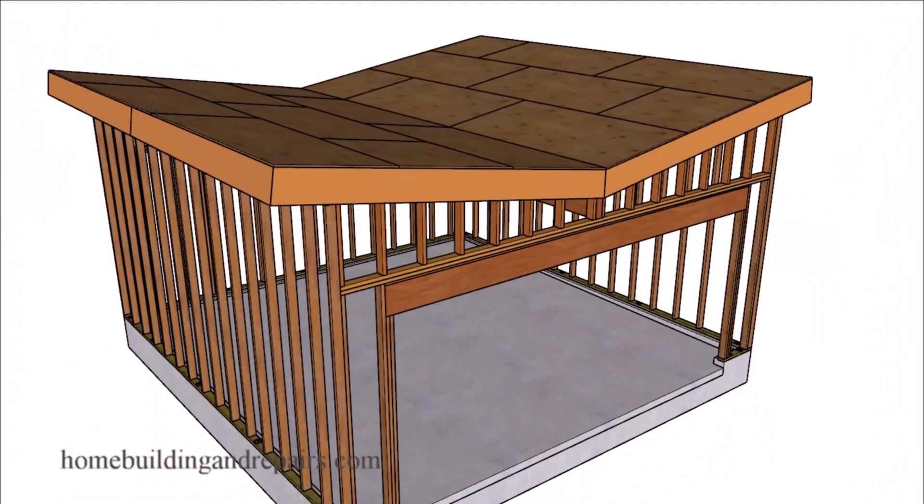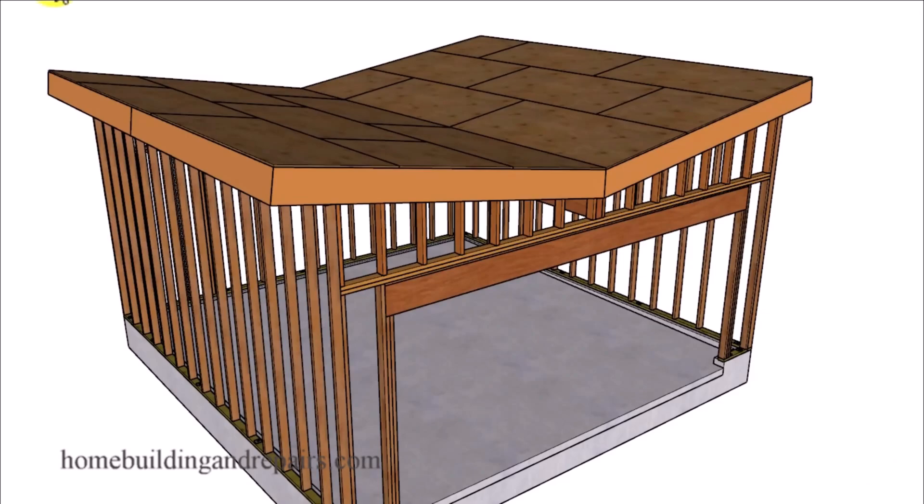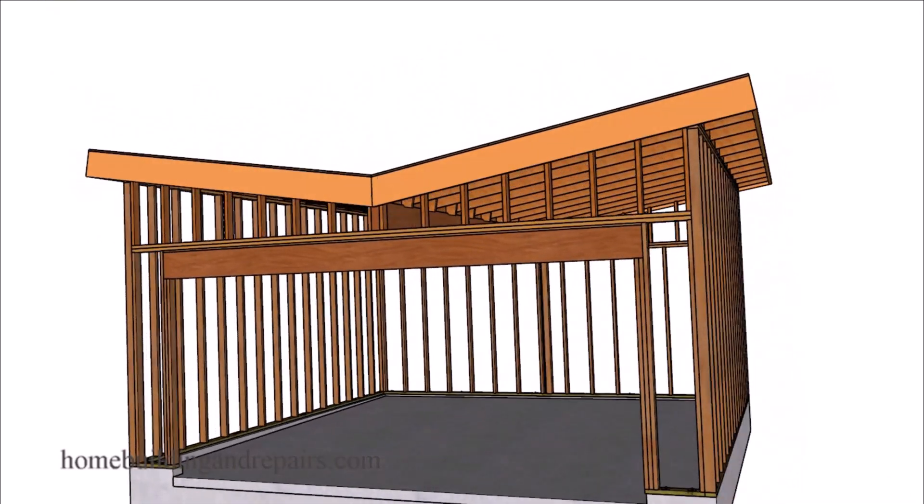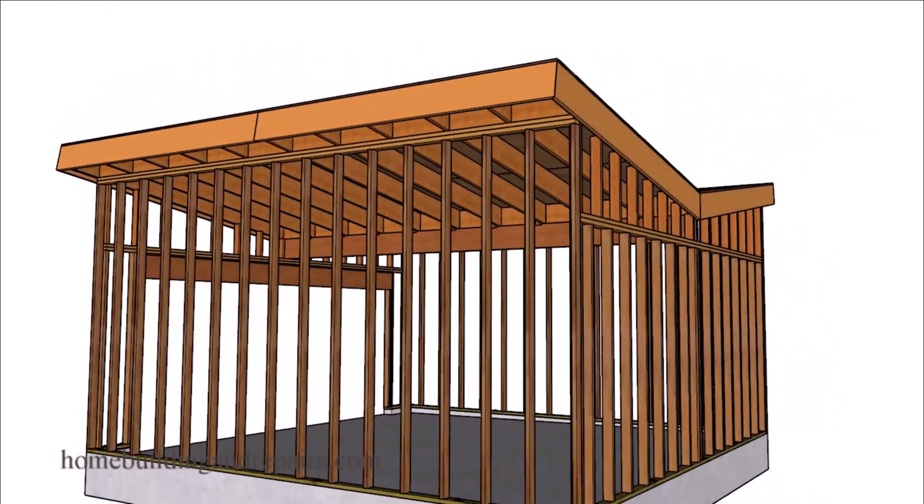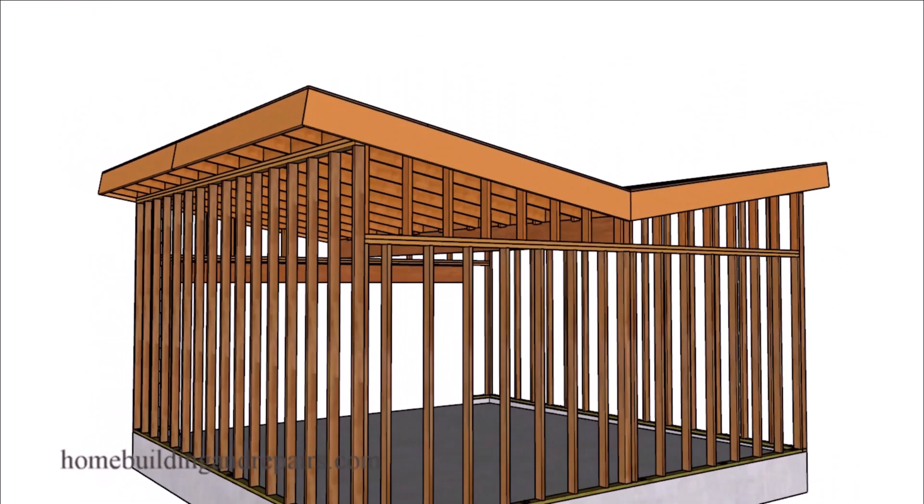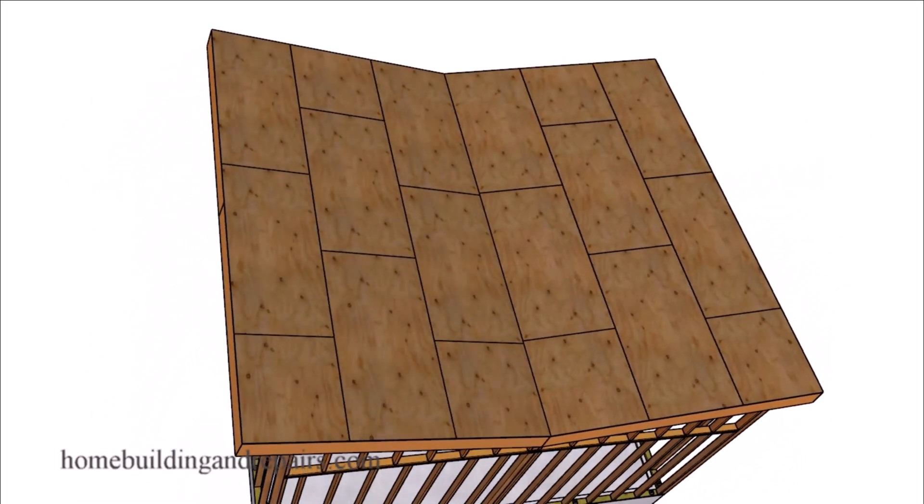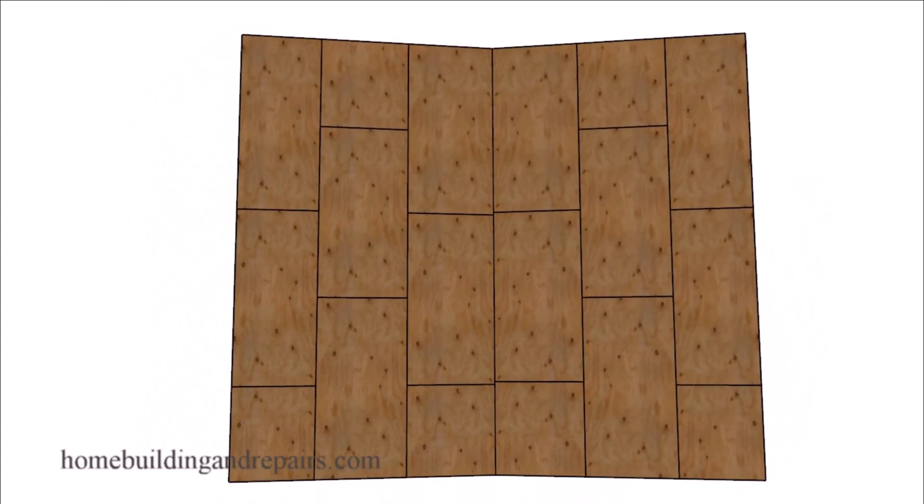And for those of you crazy builders out there who are looking for something different, you might want to build something like this. And this is often referred to as a butterfly roof design. And I would imagine that's because it looks like it has two wings, one on each side.